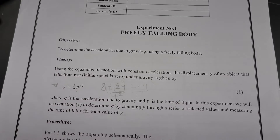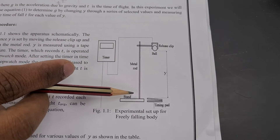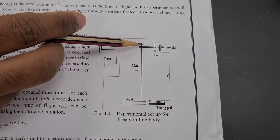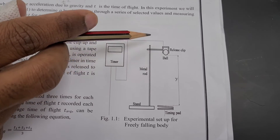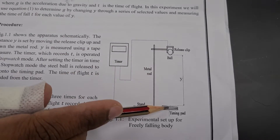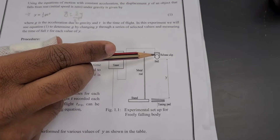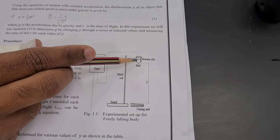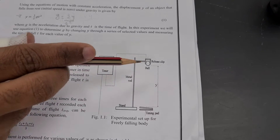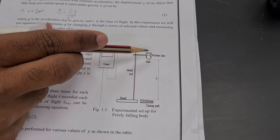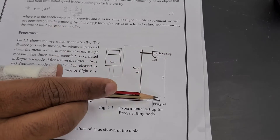The schematic diagram of the first experiment is given here. We have a stand and a release clip — you fix the ball in between this clip. There are two sensors: sensor one and sensor two, both connected with a timer box. At a specific height, you fix the clamp, drop the ball, and the timer measures how long the ball takes to reach the lower sensor.